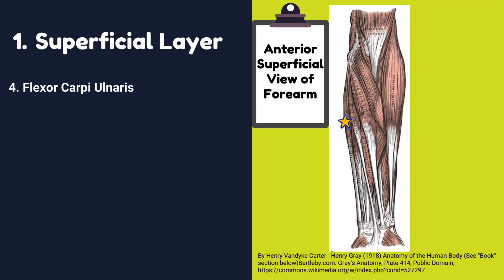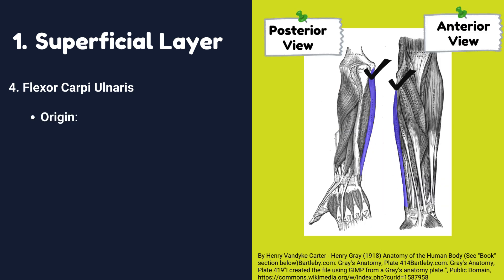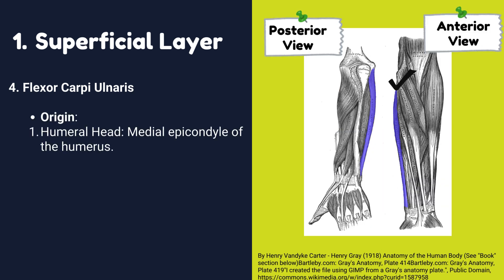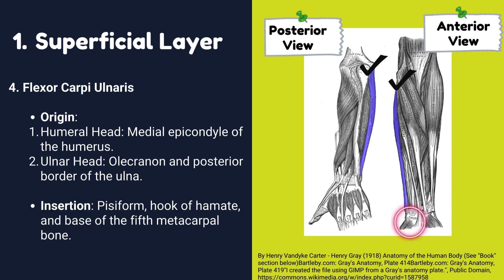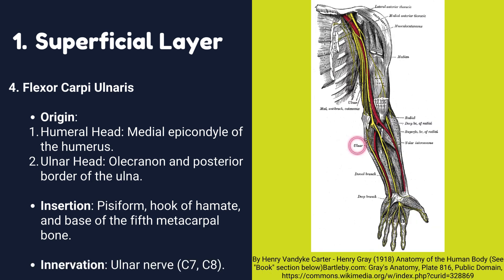Number four: Flexor carpi ulnaris muscle. Origin: it has two heads. Humeral head originates from the medial epicondyle of the humerus. Ulnar head originates from the olecranon and posterior border of the ulna. Insertion: it is inserted into the pisiform, hook of hamate, and base of the fifth metacarpal bone. Innervation: it is innervated by the ulnar nerve.